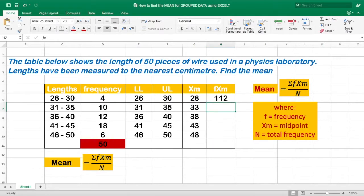And we got 112. And again, instead of multiplying each frequency and the class mark, let us just drag it down, and there you go.